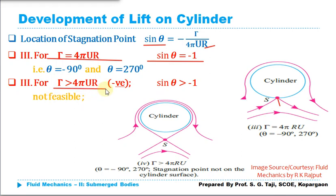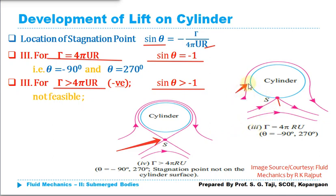Case 4: γ > 4πr. If the circulation exceeds 4πr, then sin(θ) would need to be greater in magnitude than −1, which is not possible. In this case the stagnation point would be located beyond the surface of the cylinder, which is physically impossible. Therefore, the constant circulation cannot exceed 4πr. To summarize: in Case 1 (γ = 0), stagnation points are at 0° and 180°; in Case 2 (γ < 4πr), two stagnation points lie between 180° and 270°; in Case 3 (γ = 4πr), one stagnation point exists at 270°; and Case 4 (γ > 4πr) is not physically possible.